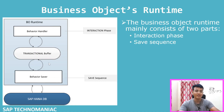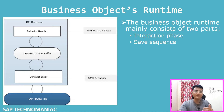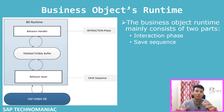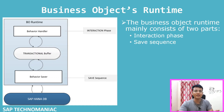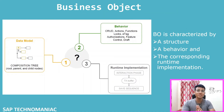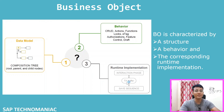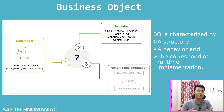The key concept here is the transactional buffer - an intermediate storage where data is held while the user interacts with the business object. The transactional buffer cannot exist without a business object instance. When the user is satisfied and clicks Save, everything is persisted to the database - in SAP terminology, we say the data is 'produced' to the database. So the three parts of the business object are: data model, behavior defined via BDL, and runtime implementation.